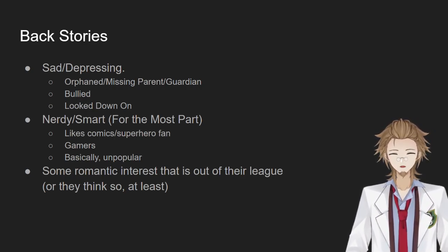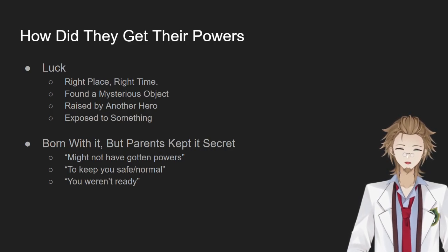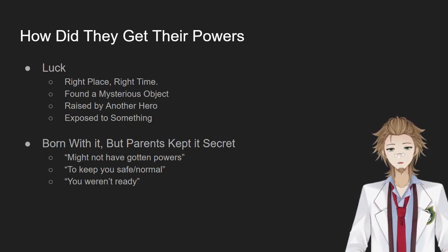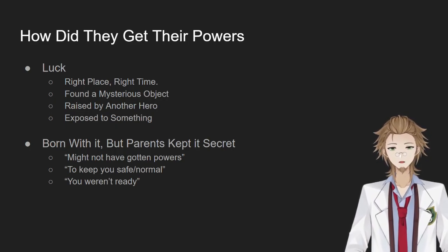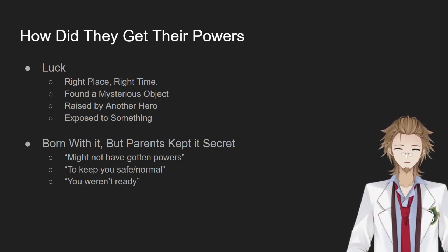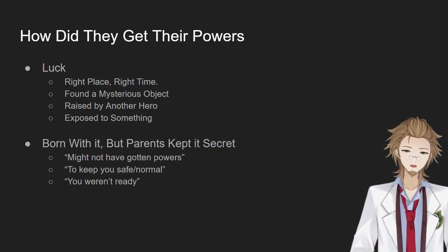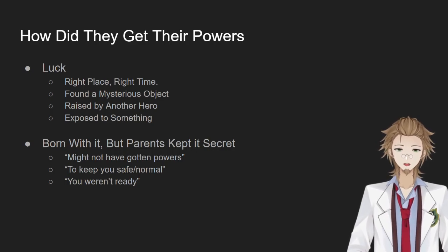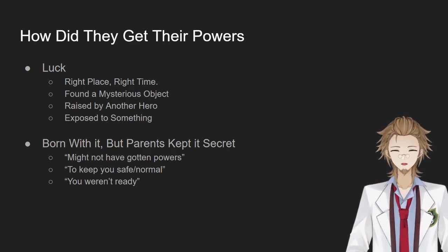Now that we have the backstory formulated, let's move on to how they got their powers. There are basically two main ways that a kid is going to get their powers suddenly. It's going to be luck — right place, right time. Think of like Spider-Man getting bit by the spider at that particular moment in time. They find a mysterious object — think of the most recent Ms. Marvel TV series where she finds a mysterious bracelet that gives her powers. Raised by another hero, such as all the Robins being taken in by Batman, or Speedy from Green Arrow. Or they're exposed to something, whether it's cosmic rays or radiation.